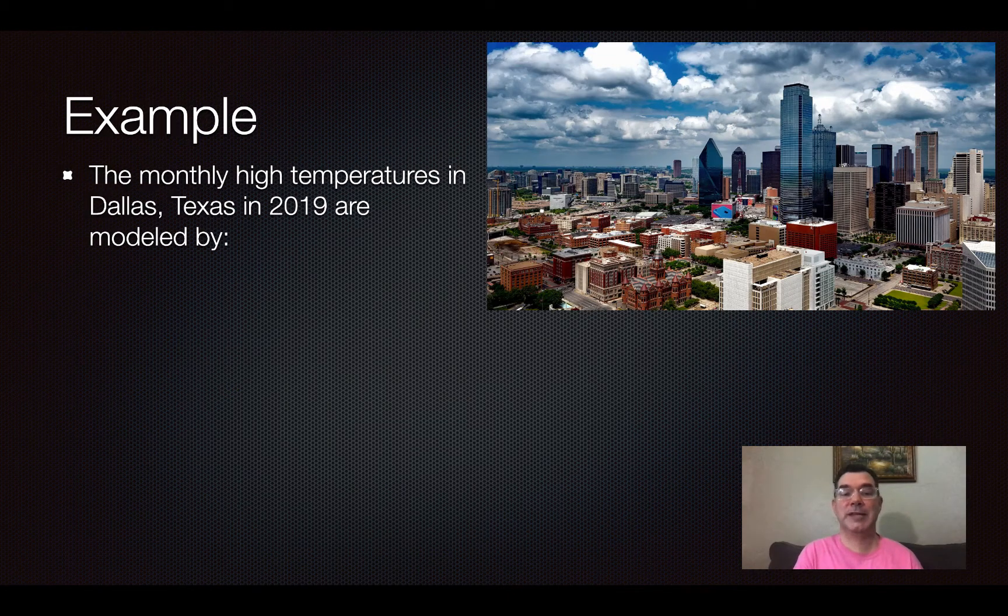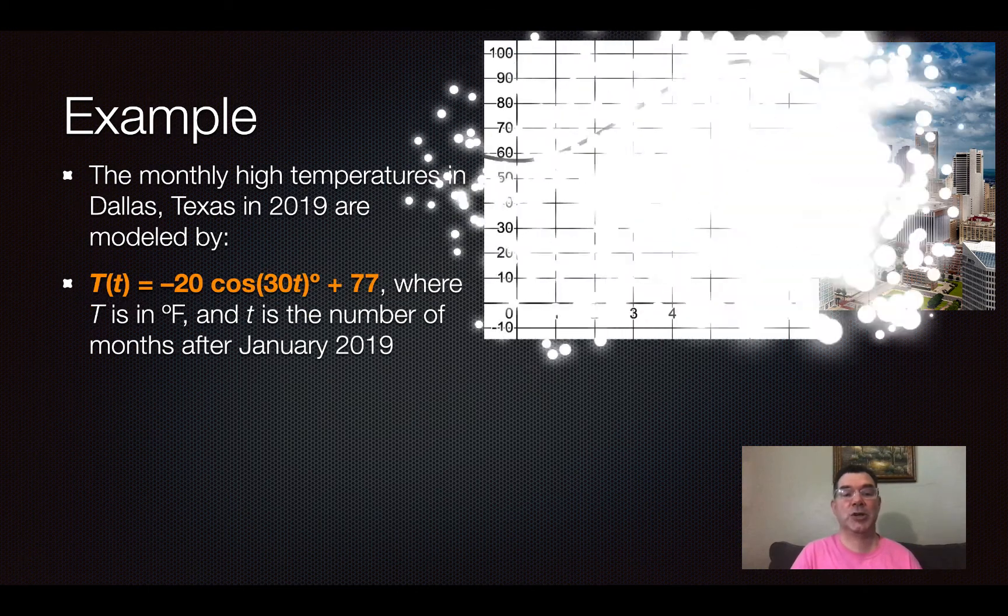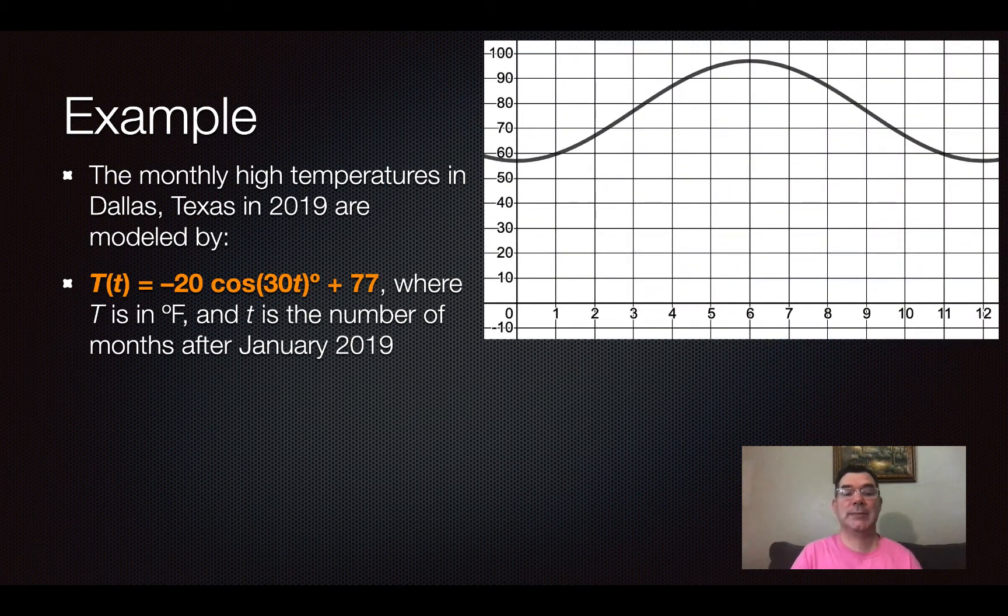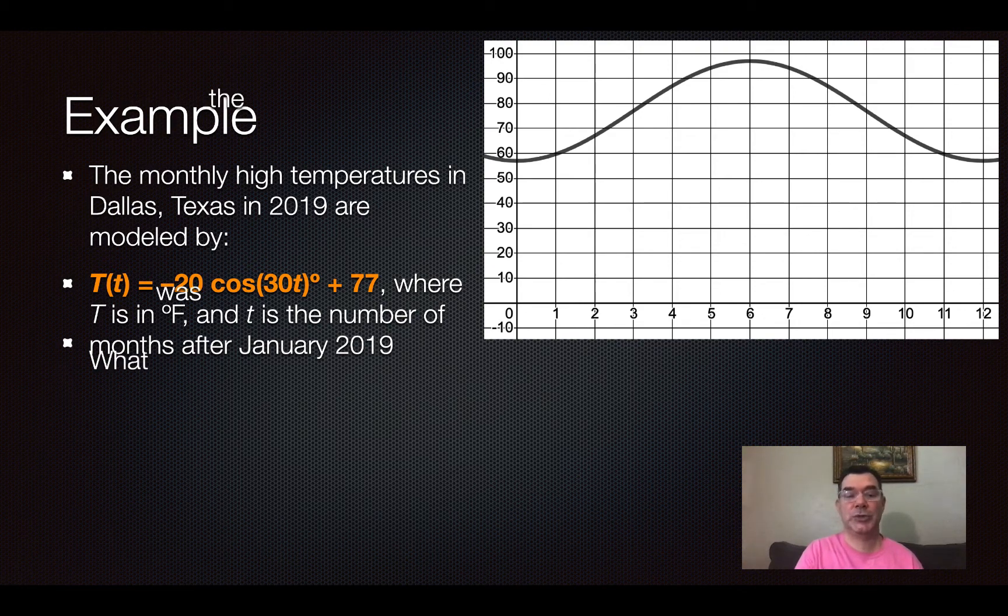So here's an example of temperatures in Dallas, Texas in 2019 and they are modeled by this curve right here. Negative 20 times the cosine of 30t degrees plus 77 where t is in degrees Fahrenheit and little t is the number of months after January 2019.